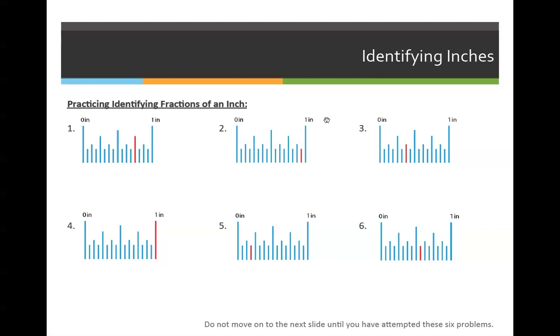When you do your problems online, I want you to make sure that you identify what the starting point and the stopping point is. Sometimes the ruler will say starting at 3 and ending at 4, and the red line will be right here.